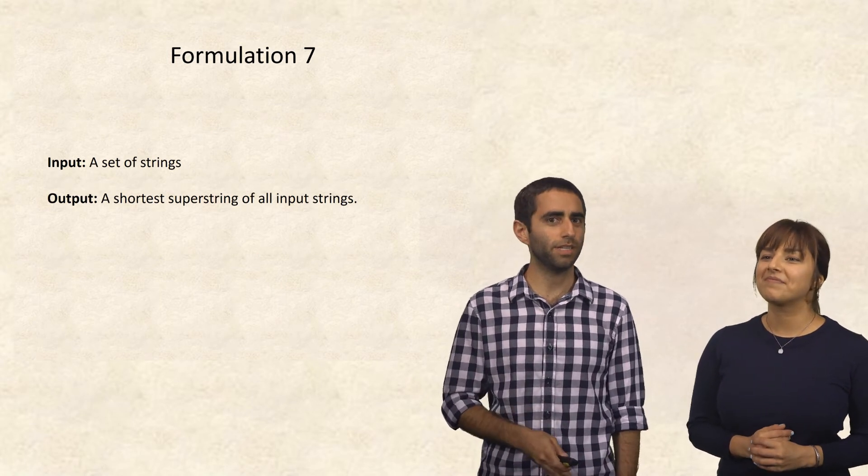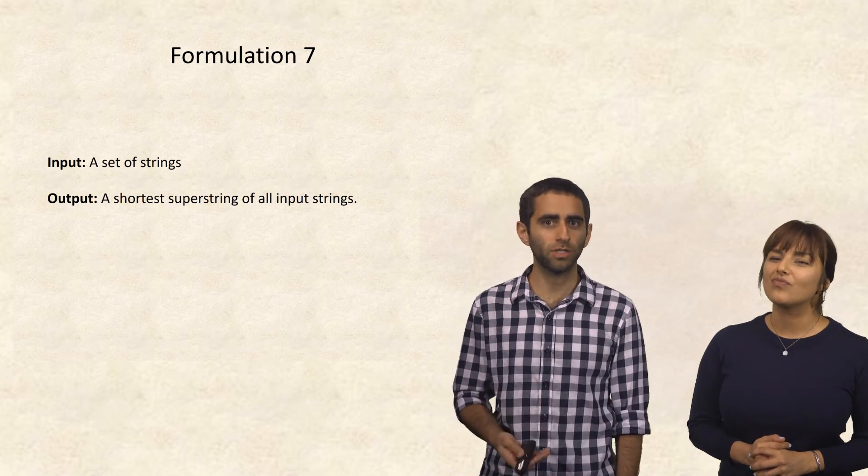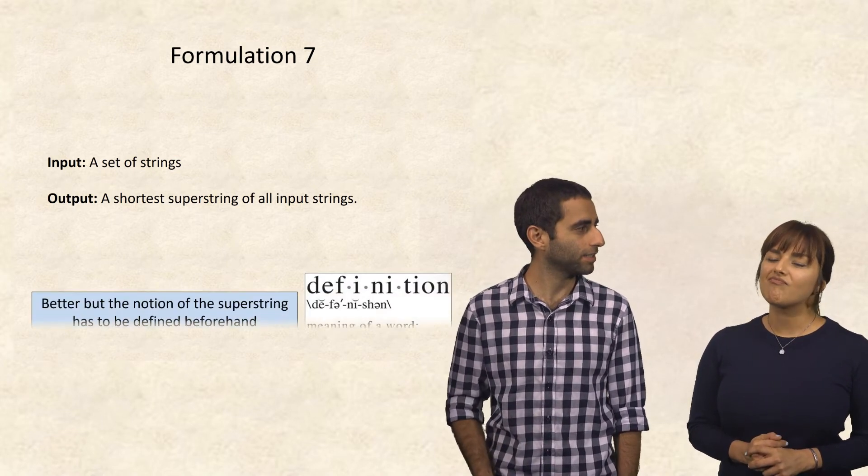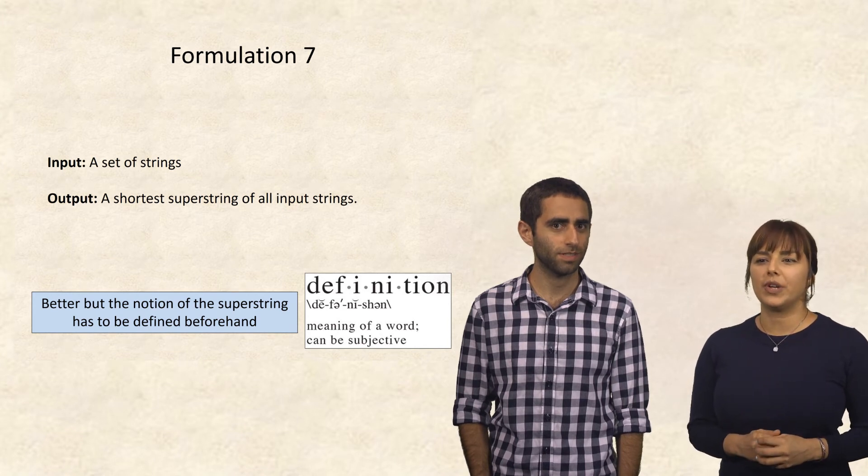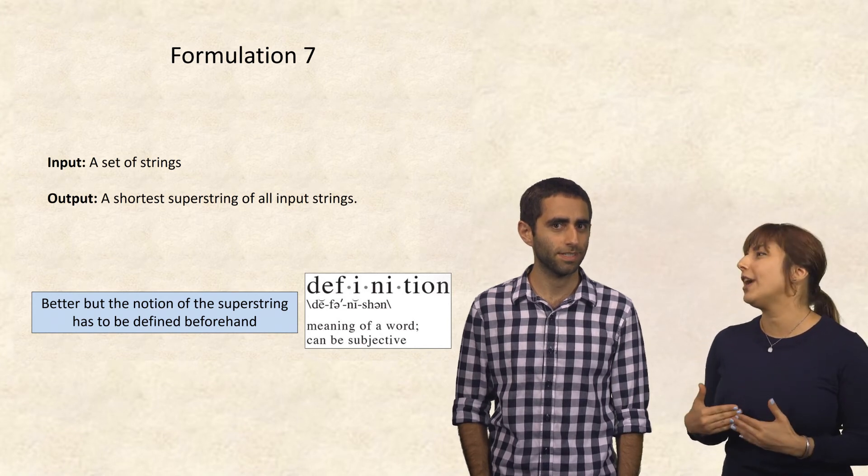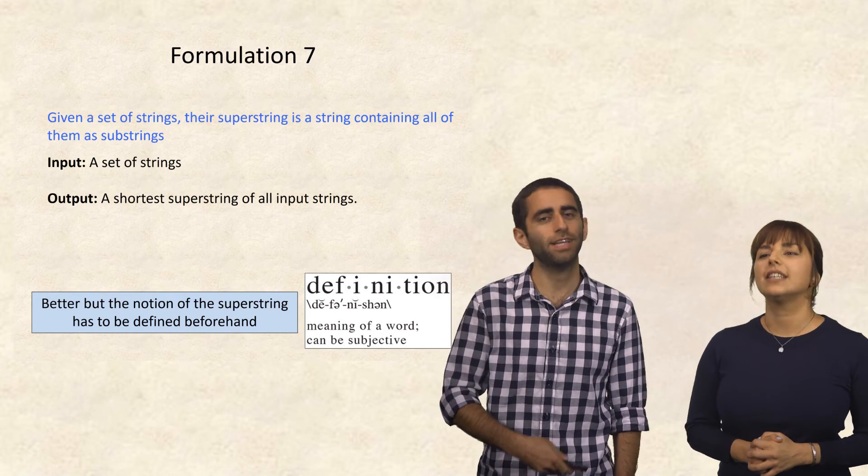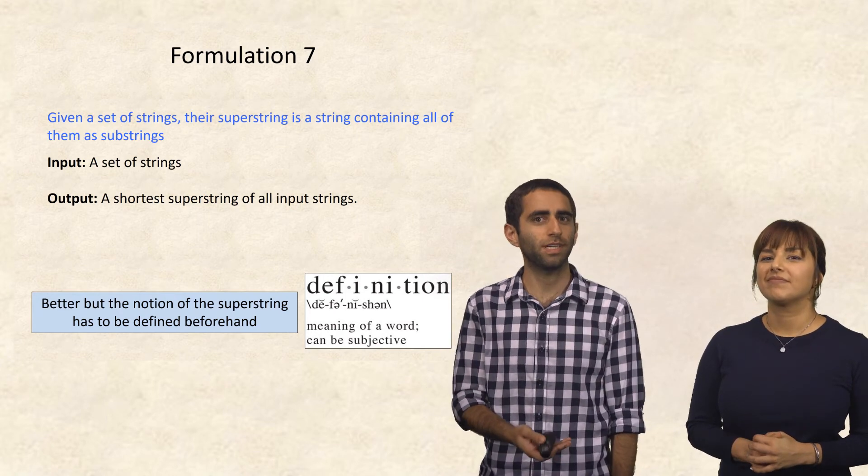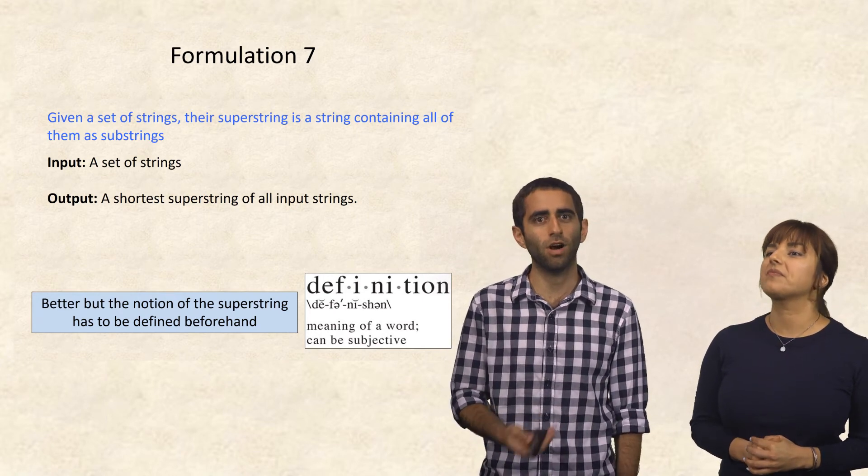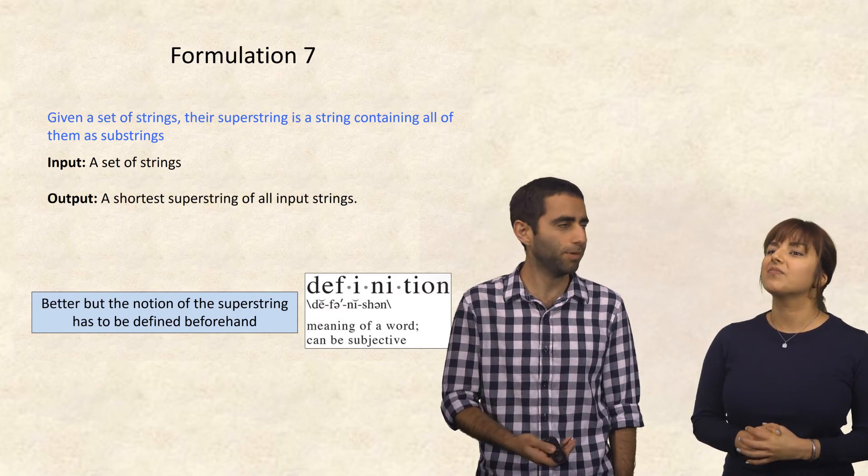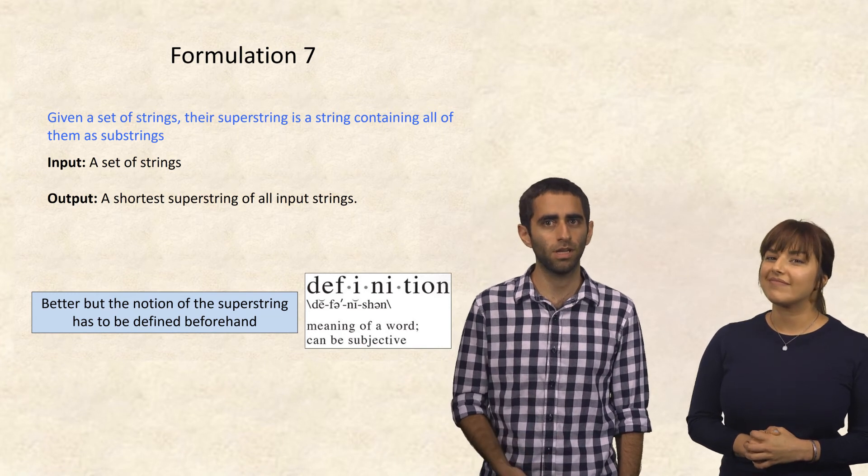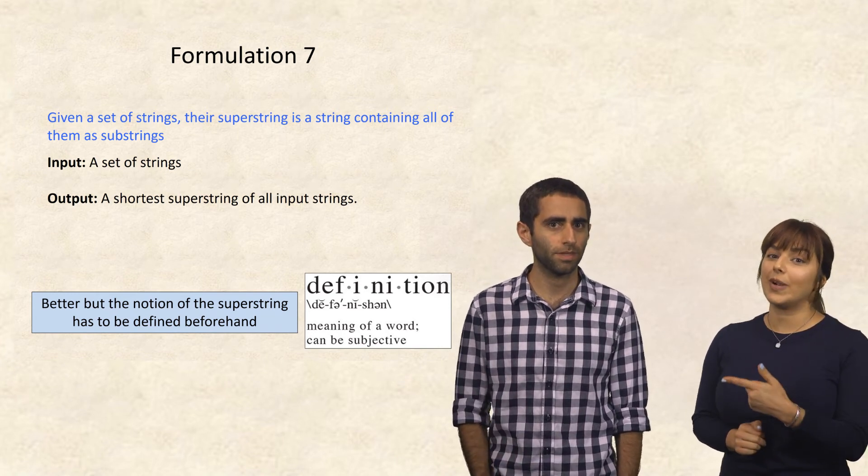So what if the input is a set of strings, and the output is a shortest superstring of all input strings? That's better, but the notion of superstring has to be defined beforehand for Alice. Ah, okay. So beforehand I'll say, given a set of strings, their superstring is a string containing all of them as substrings, and then now my formulation is, as I said before, input a set of strings, and then output is the shortest superstring of all input strings. That's great.